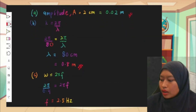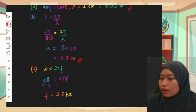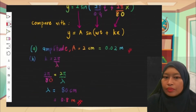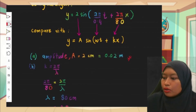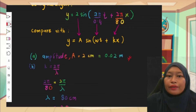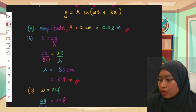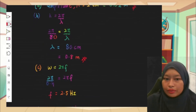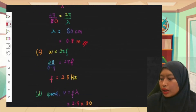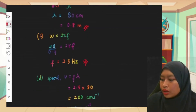For part c, the question asks for frequency. We refer to the comparison above — we have ω = 2π/0.4. Using ω = 2πf, we set 2π/0.4 = 2πf and rearrange to find f = 2.5 Hz.